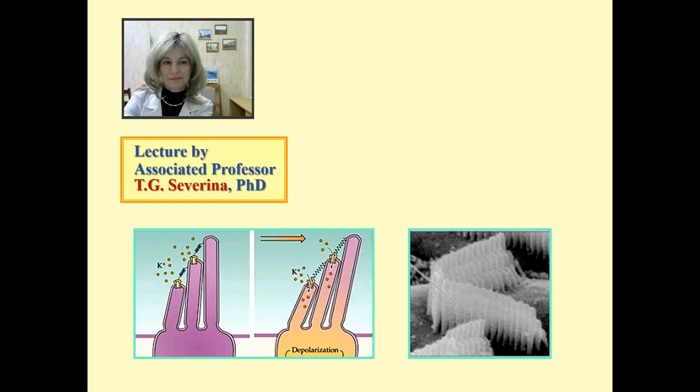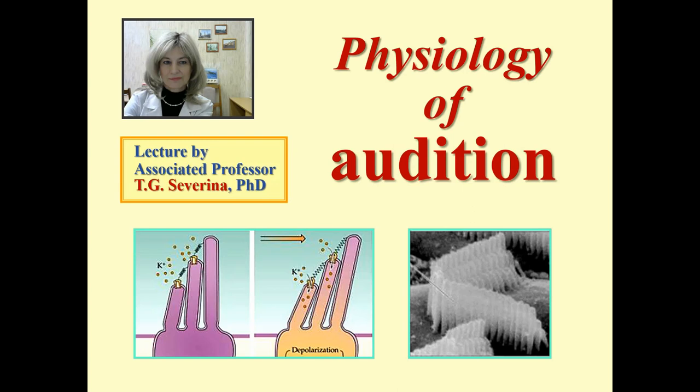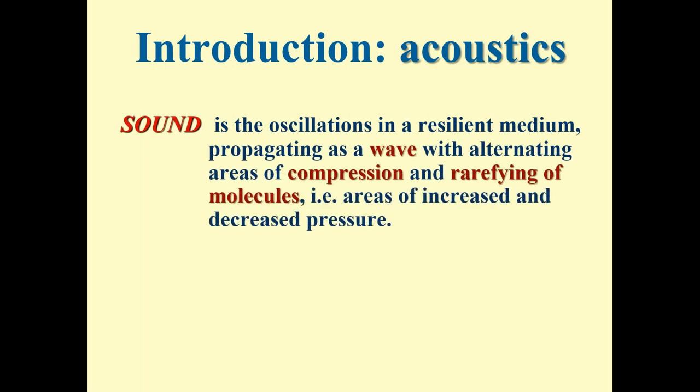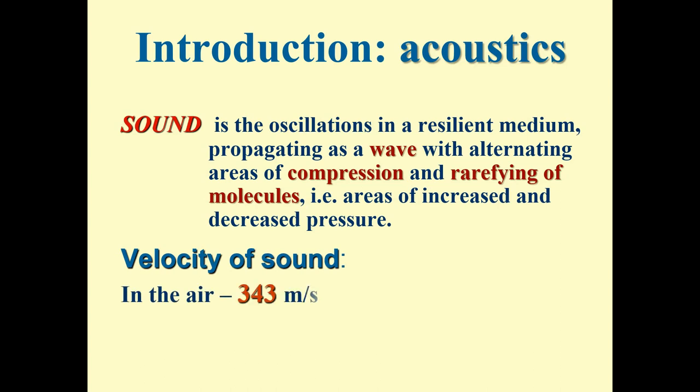This lecture is about the physiology of audition. Before we start considering the auditory system functioning, I'm going to remind you of some basics of acoustics — the section of physics that studies sound. Sound is the natural stimulus for the auditory system. A simple definition: sound is a mechanical wave, an oscillation in a resilient medium propagating as a wave with alternating areas of compression and rarefaction. The velocity of sound in air is approximately 343 meters per second.